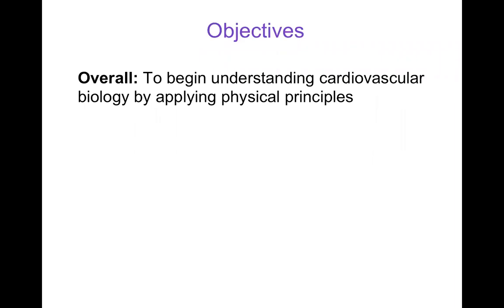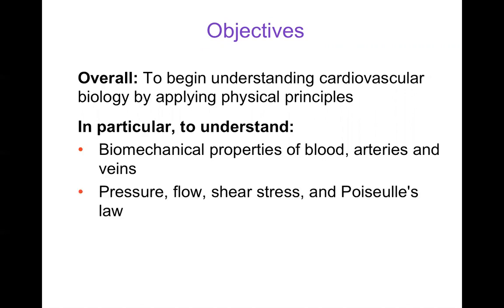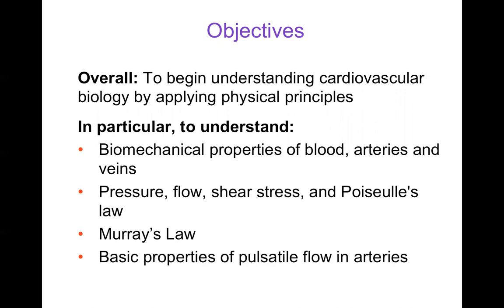The overall objective of these lectures is to begin understanding cardiovascular biology by applying physical principles. In particular, we want to cover the biomechanical properties of blood, arteries, and veins; understanding pressure, flow, and shear stress; and understanding Poiseuille's law. We use Poiseuille's law to explain Murray's law, or the cube law. We'll also talk about basic properties of pulsatile flow in arteries, mostly for rigid vessels, and we'll be primarily considering blood flow in arteries.